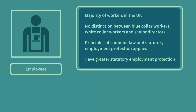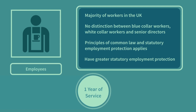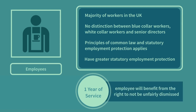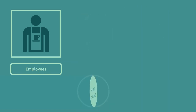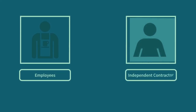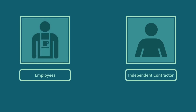In particular, after one year's service, an employee will benefit from the right not to be unfairly dismissed. It can be difficult to make the distinction between an independent contractor and an employee. In practice, this distinction depends on many factors. Aids to assist making the distinction come from both Parliament in the form of statutory guidance, and through judicial decisions under common law.